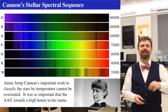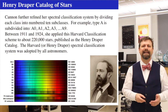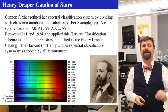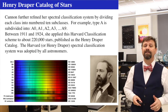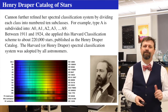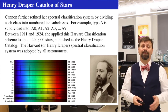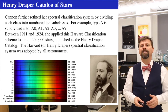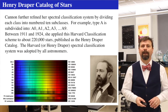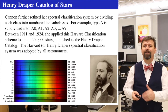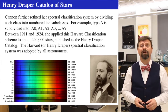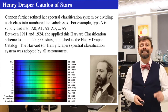About a decade later, she created sub-classifications, further dividing each stellar spectral class with a number from 0 to 9 — for example, the highest temperature A star was an A0, the lowest temperature A star was an A9. She took another 13 or so years to apply this concept to about another quarter million stars, published as the Henry Draper catalog.